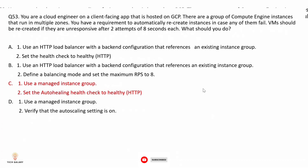Option D: use a managed instance group and verify that the auto-scaling setting is on — not correct because auto-scaling and auto-healing are different. Auto-scaling sets the minimum and maximum number of instances, while auto-healing checks the health status of instances and recreates them if they go down. It is important to set auto-healing rather than auto-scaling for this scenario. So option C is the correct answer.